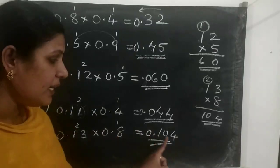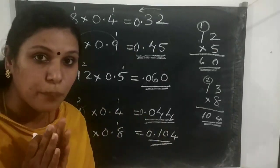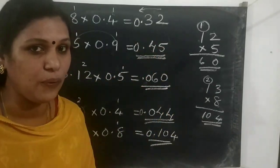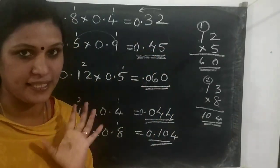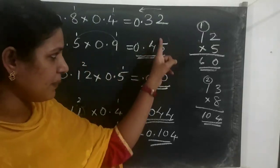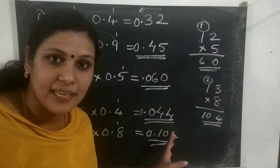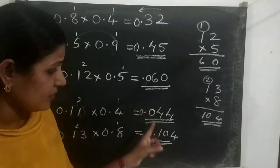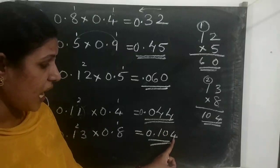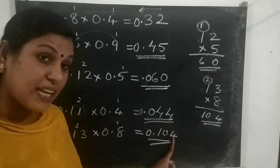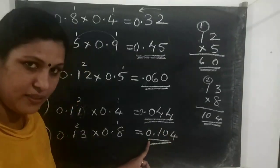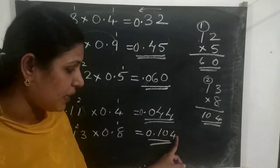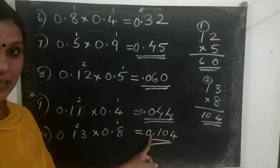In multiplication, the result is known as the product. When we count the place values and put the decimal point, we count from the right to the left side.